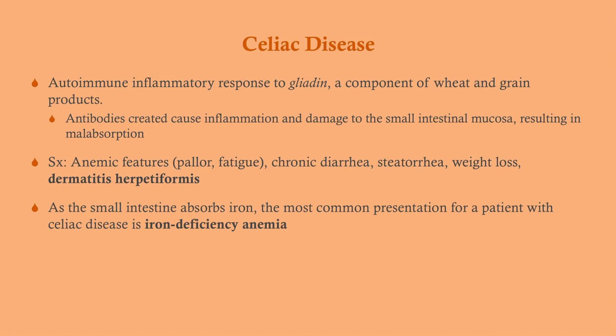These patients typically present saying they have bloating, abdominal pain, and diarrhea that goes on for a long time. Some think they're lactose intolerant, cut out milk, and it does not improve. They may also have anemic features due to malabsorption — pallor and fatigue — and due to chronic inflammation. They'll have chronic greasy diarrhea and weight loss. They can also get a dermatologic manifestation called dermatitis herpetiformis. Remember, the small intestine absorbs iron, so these patients tend to be anemic both from chronic inflammation and difficulty absorbing iron.